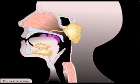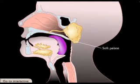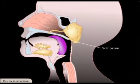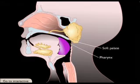As food is swallowed, the soft palate blocks the upper pharynx to prevent food from entering the nasal cavity, and multiple voluntary muscles in the face, neck, and tongue contract, pushing food particles through the pharynx.